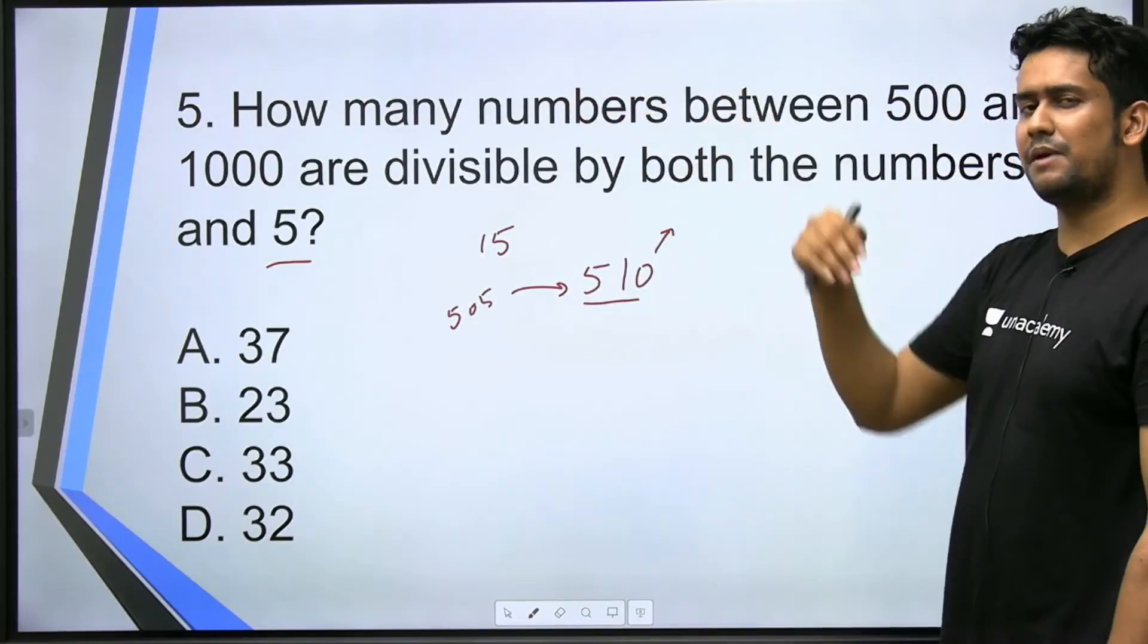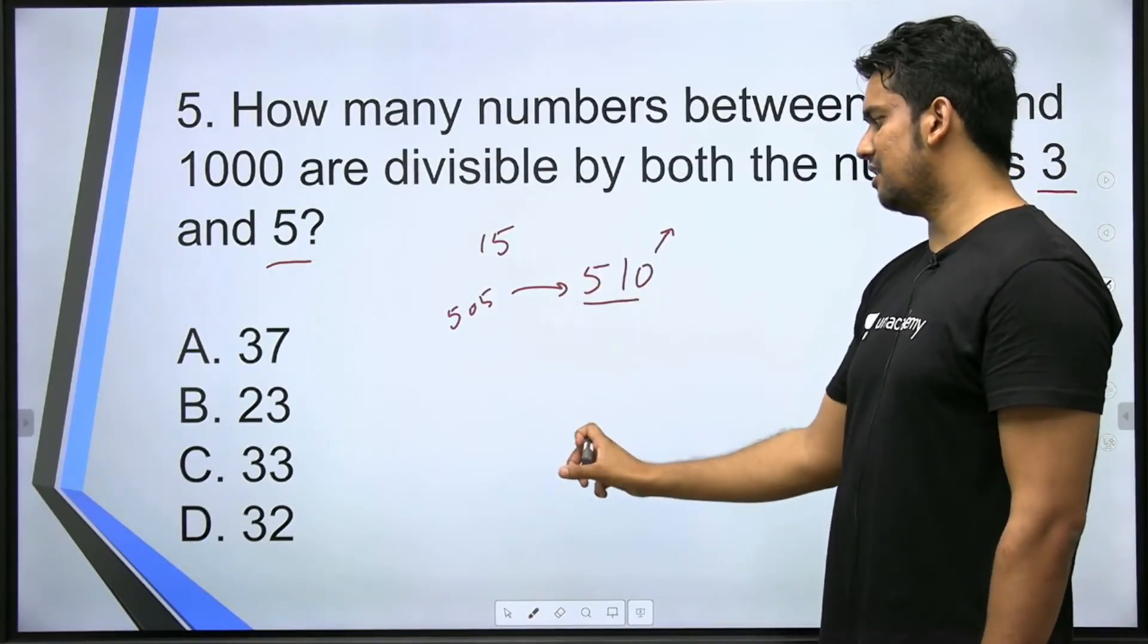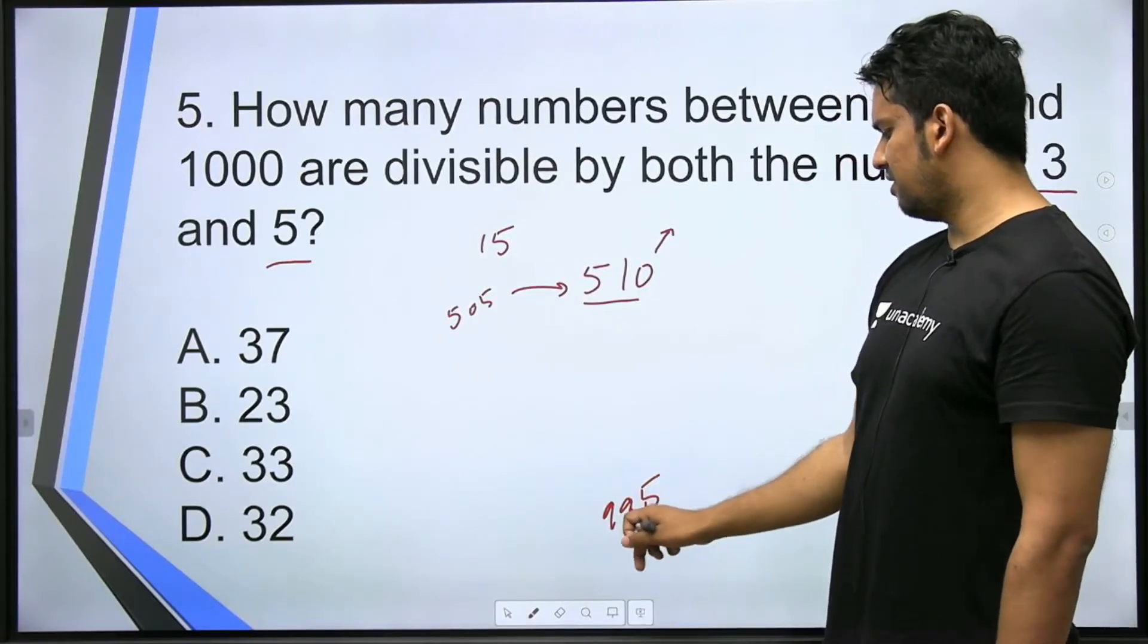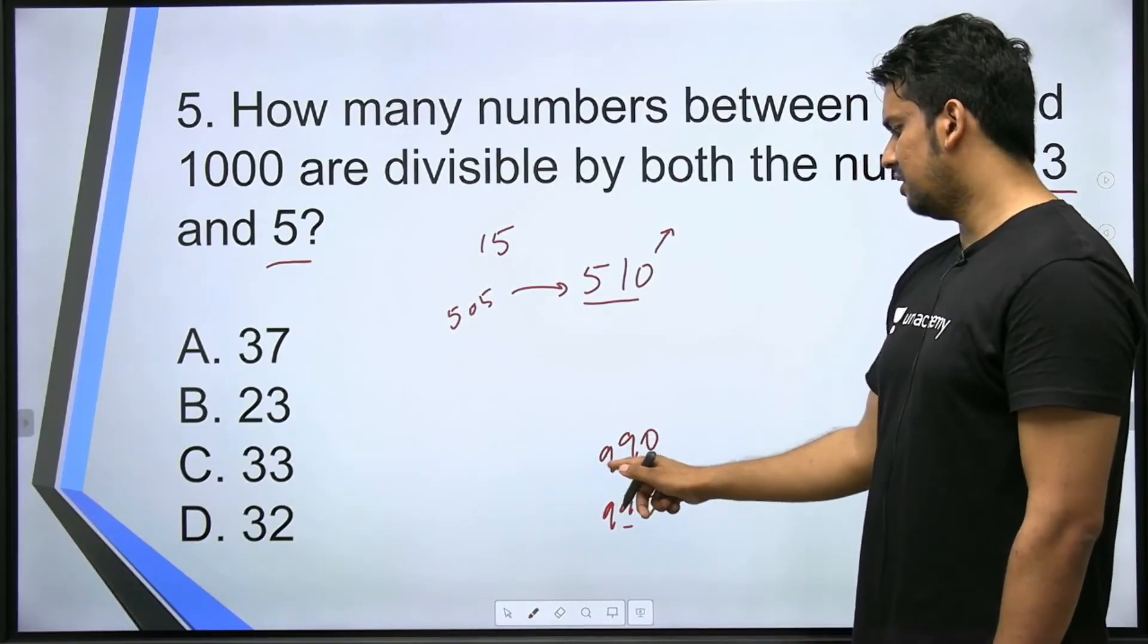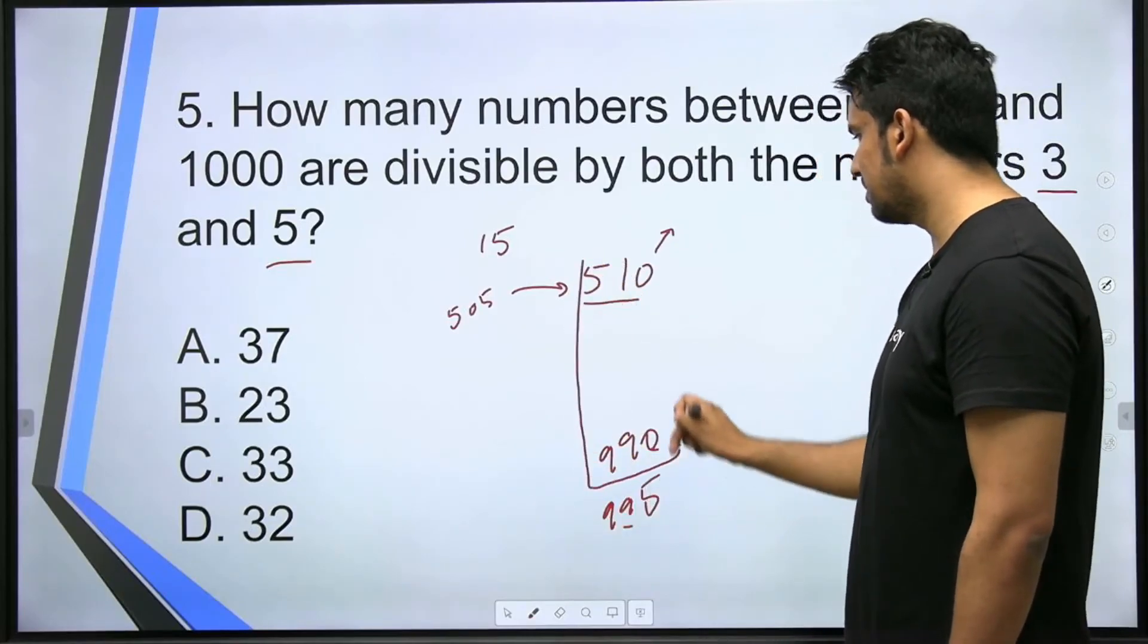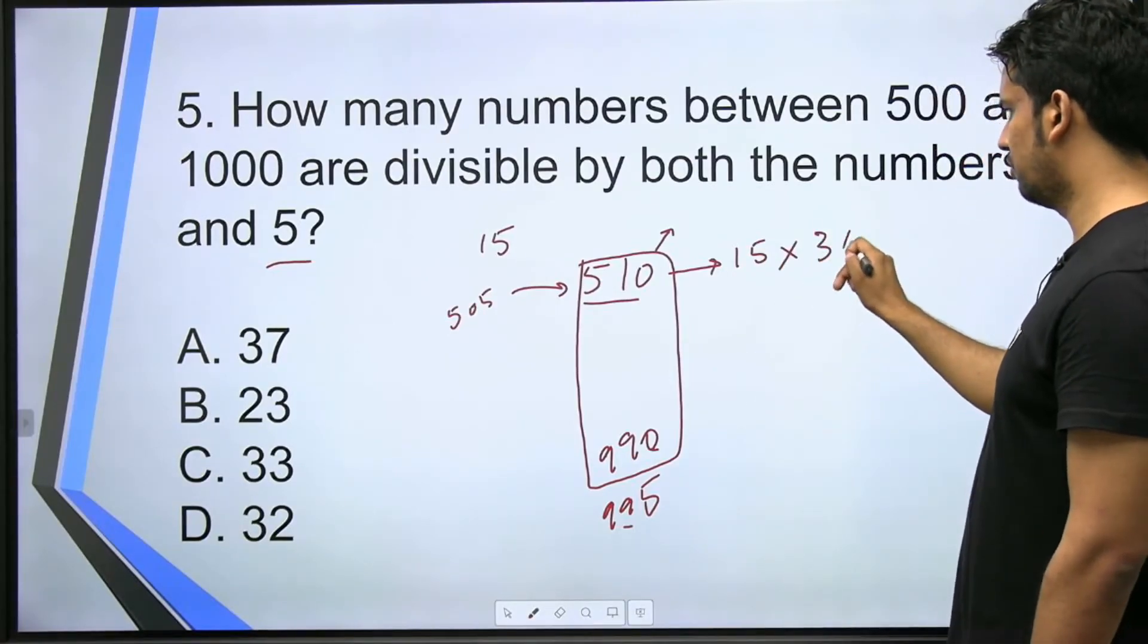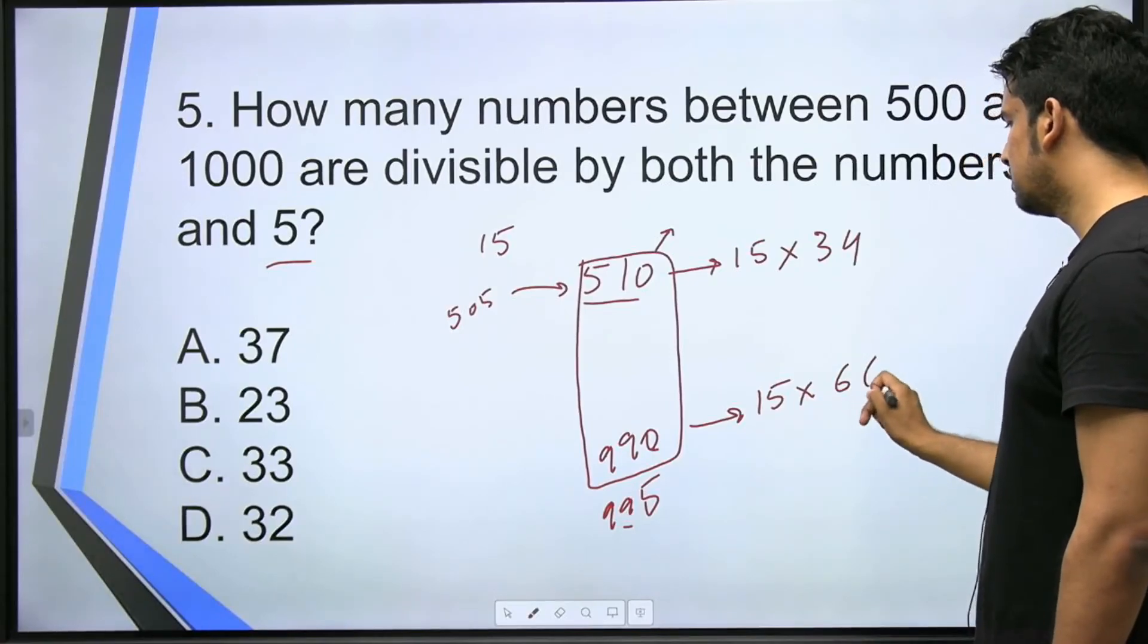Now the last number before 1000 that's divisible by 15. Divisible by 15, could be 995, 995... 995 is not divisible by 3. Just before that, 990. This is divisible by both 3 and 5. So these are our first and last numbers divisible by 15. This is 15 into 34 and this is 15 into 66.